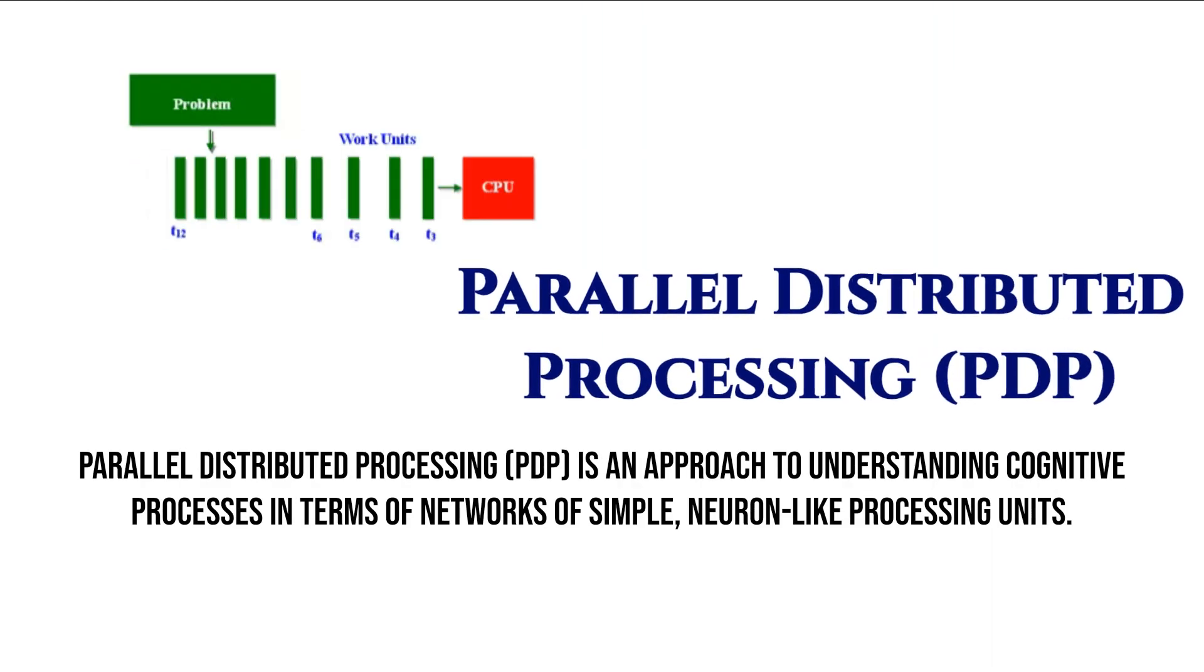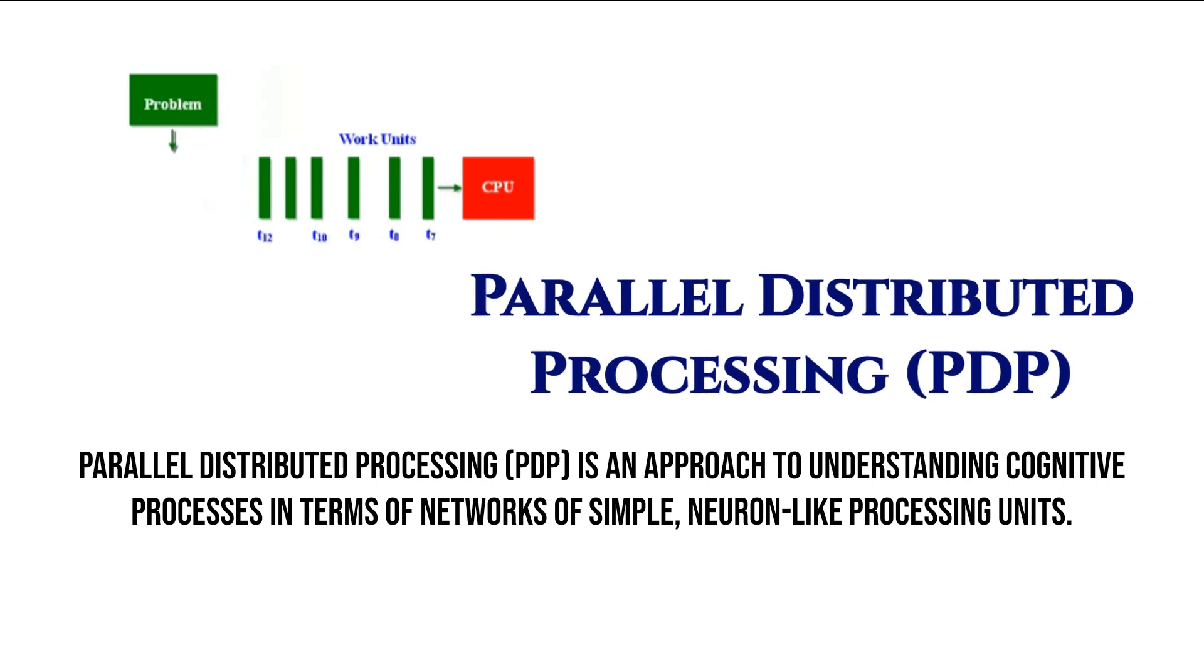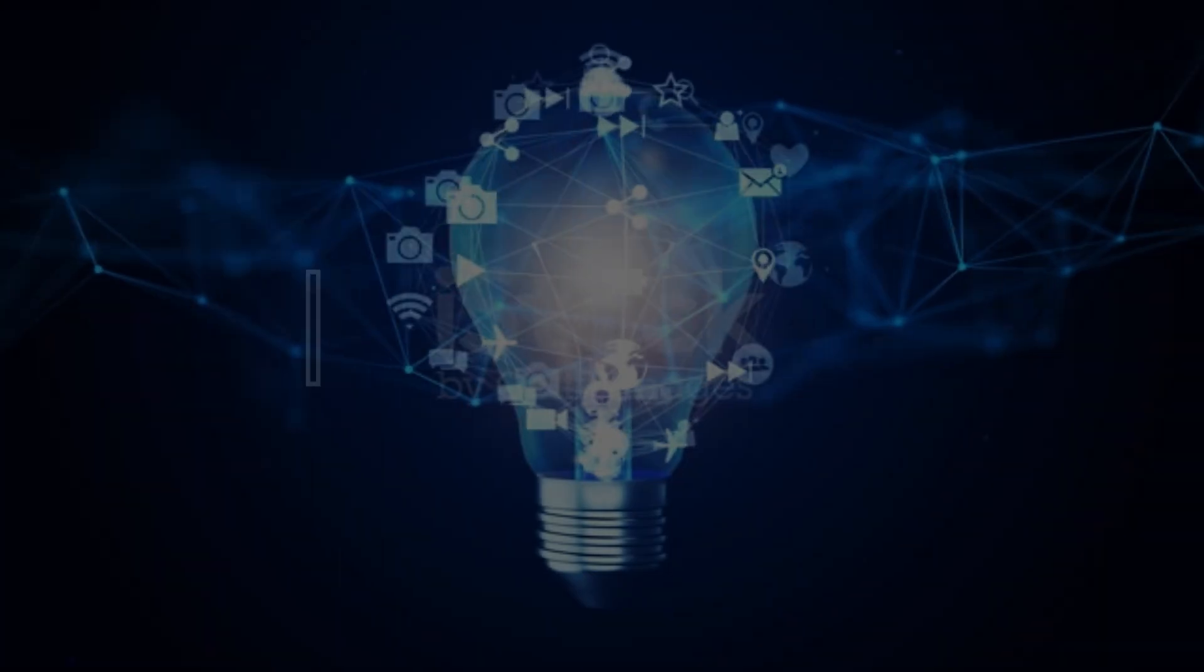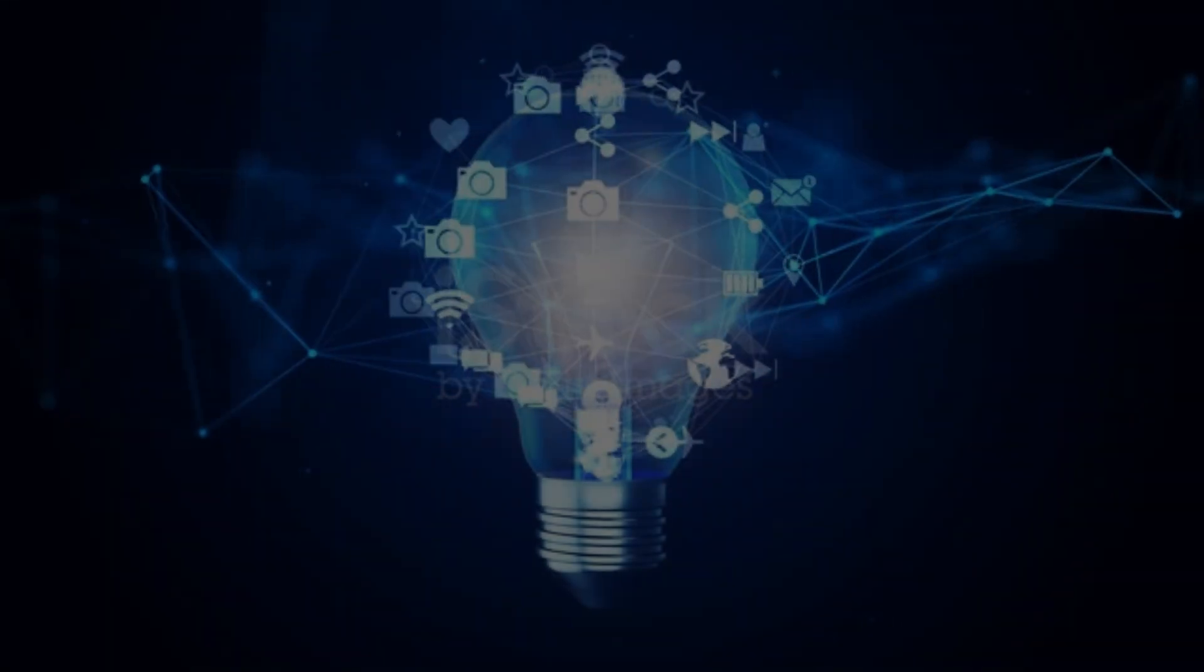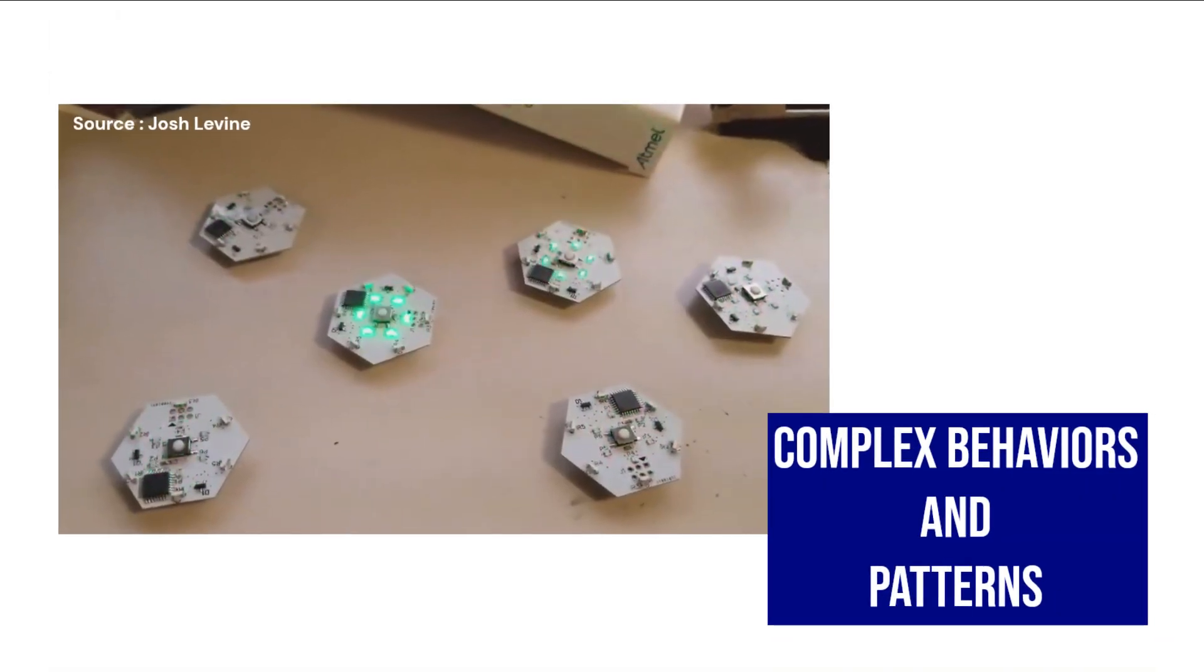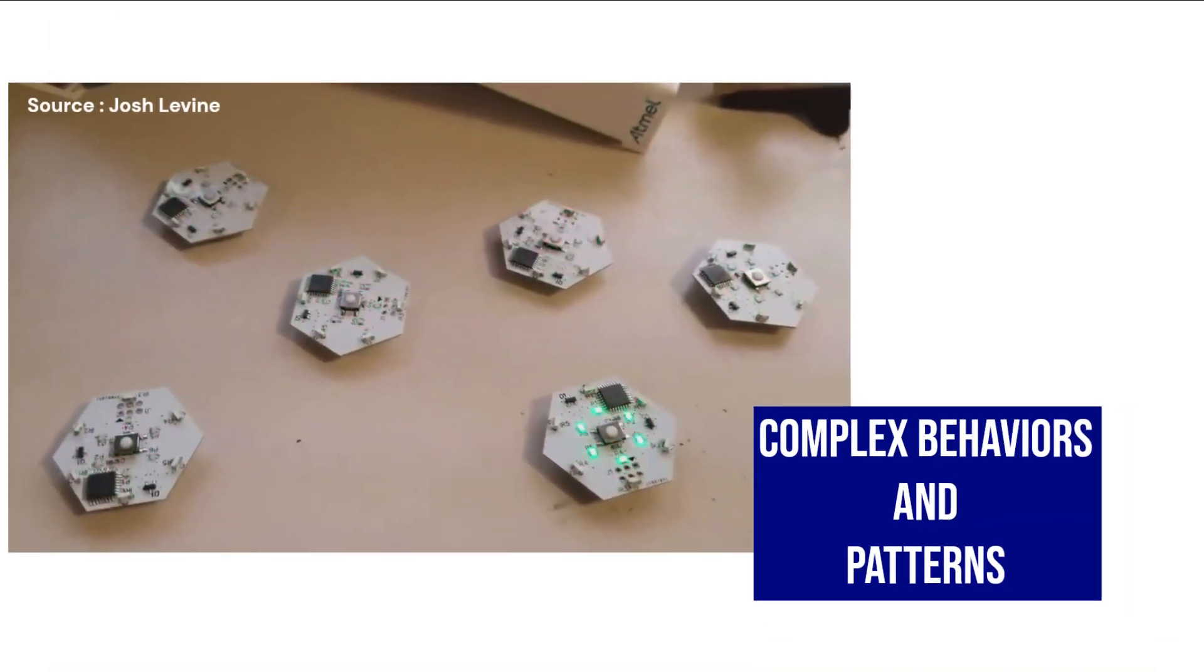Moving forward, the 1980s witnessed the evidence of parallel distributed processing (PDP), a concept demonstrated by Rumelhart, McClelland, and Hinton. The 1990s saw a surge toward connectionism, emphasizing the emulation of interconnected nature in neural elements. Researchers made significant strides in replicating complex behavior and patterns.